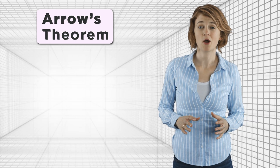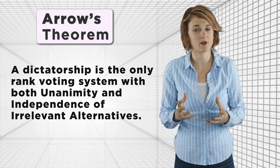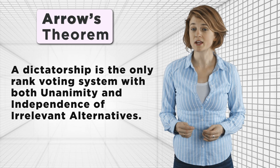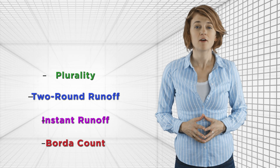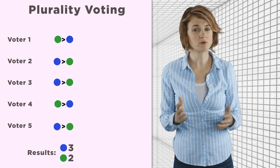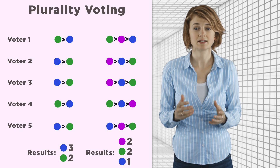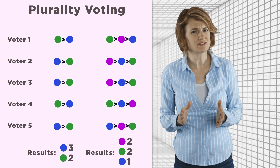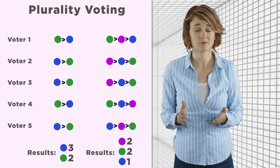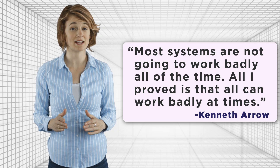The conclusion of Arrow's theorem is powerful: only a dictatorship satisfies these two desirable properties. But the strength of the conclusion comes from the strength of the premises. In particular, the assumption that a rank voting system has independence of irrelevant alternatives might be too much—all four of the voting systems we reviewed fail to have this property. Here's an example with plurality voting: most people prefer blue to green, but once purple is introduced, many blue voters switch to purple and green is now ranked above blue. Purple is an irrelevant alternative—it shouldn't impact the relative rankings of green and blue, but it does. As Kenneth Arrow said of his own impossibility theorem: 'Most systems are not going to work badly all of the time. All I proved is that all can work badly at times.'